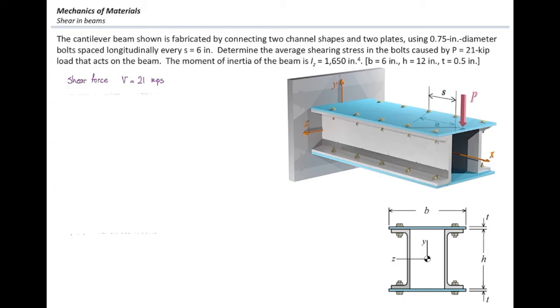The second property we need is the moment of inertia, which is 1650 inch to the fourth. It is given, so I don't need to calculate that. The other property we need to determine is the first moment of area, or capital Q. For determining Q, we need to answer the question: what part is connected to the rest of the section by the fasteners?